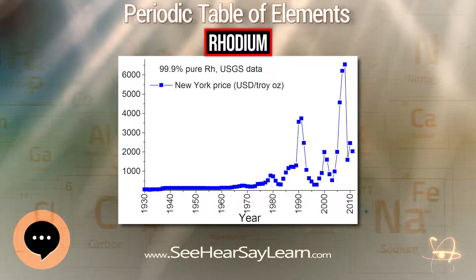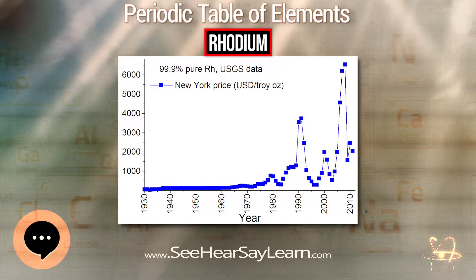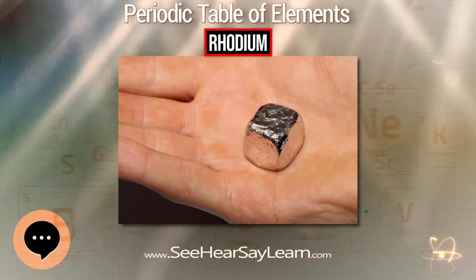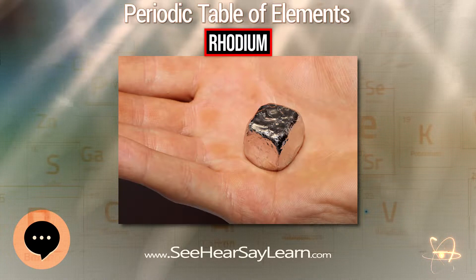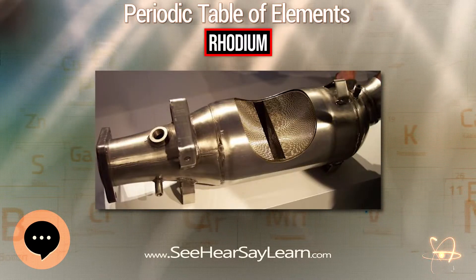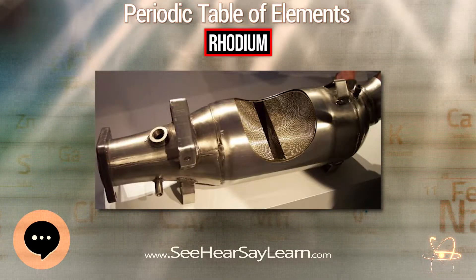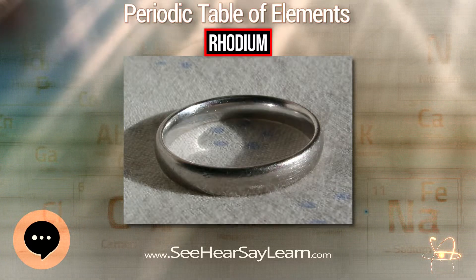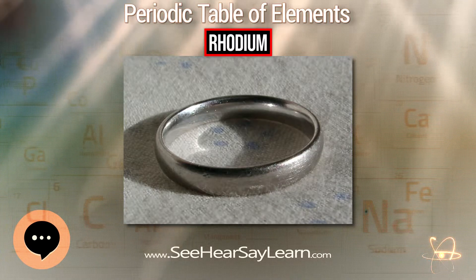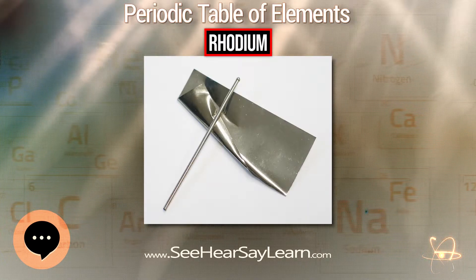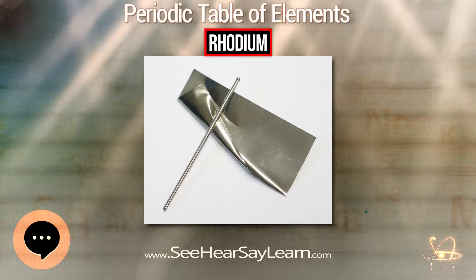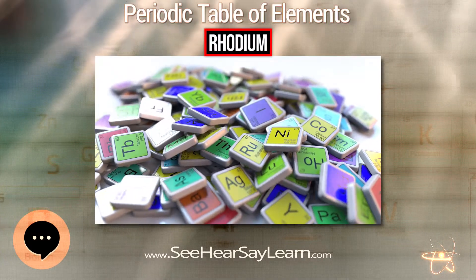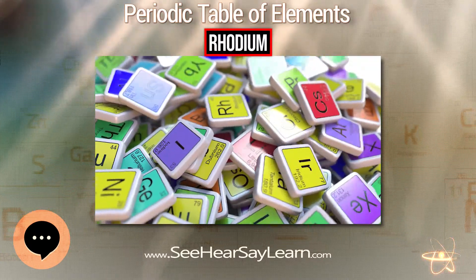Rhodium is rarely found as a chemical compound in minerals such as bowieite and rodplumsite. It is one of the rarest and most valuable precious metals. Rhodium is found in platinum or nickel ores together with the other members of the platinum group metals. It was discovered in 1803 by William Hyde Wollaston and named for the rose color of one of its chlorine compounds produced after reacting with aqua regia.